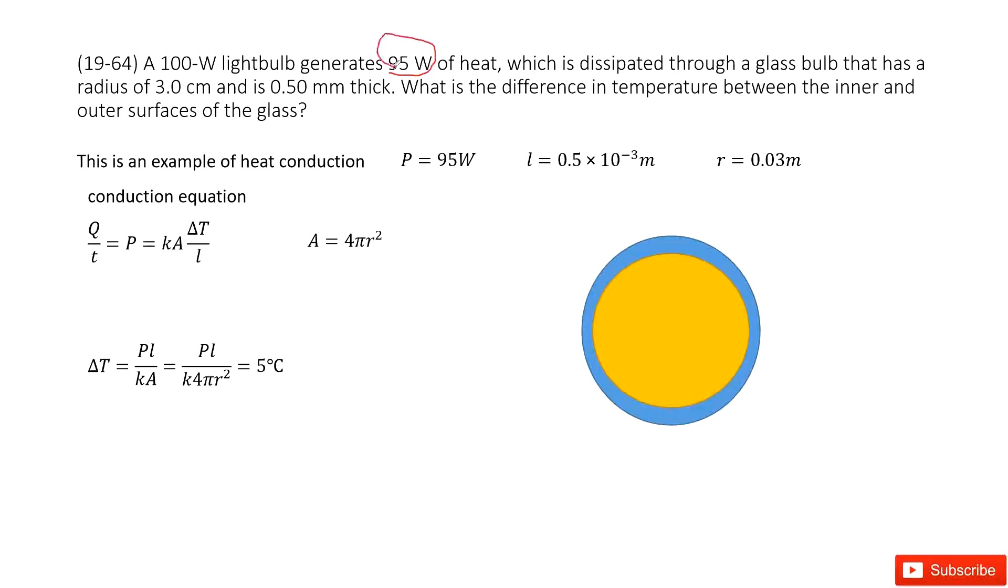So we choose this one. So there we write the P as 95. And this 100 watt is just confusing you. This is how much energy it consumed, the electric energy. This is electric power for the light bulb. This is the energy for the heat. So we write it there.